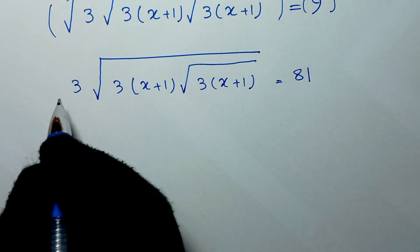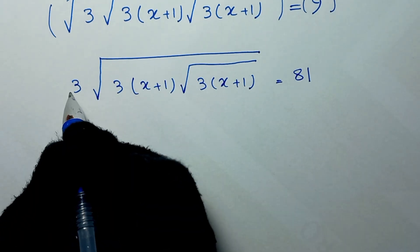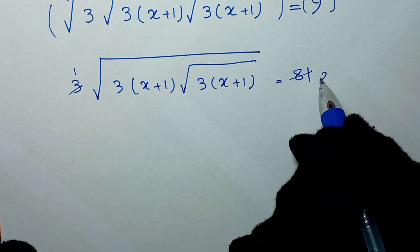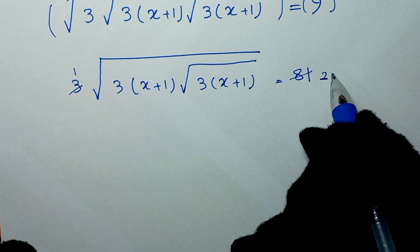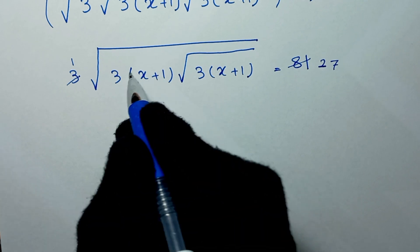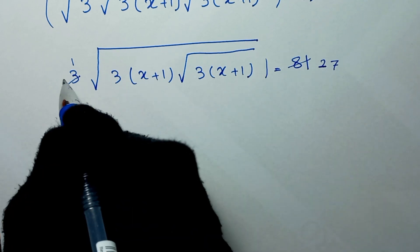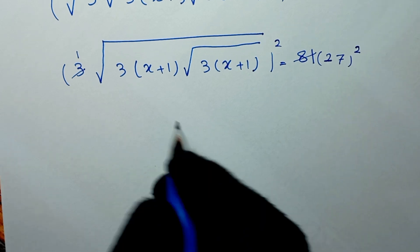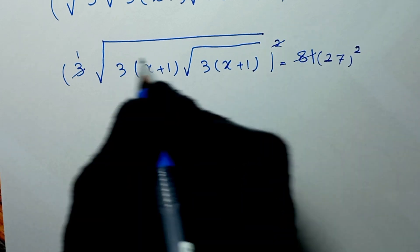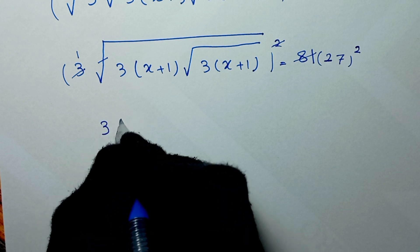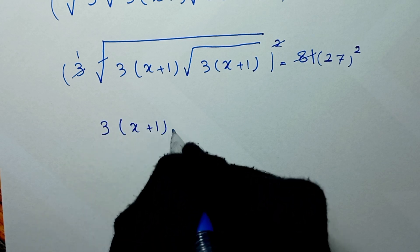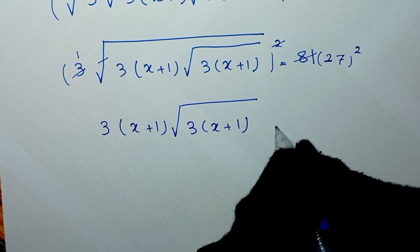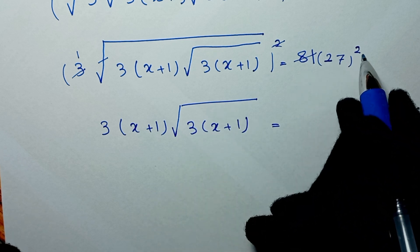In the next step, we divide both sides of the equation by 81 — 81 divided by 3 is 27. Then in the next step, we square both sides of the equation again. This power of 2 cancels the square root, and it will be 3 times x plus 1 times square root of 3 times x plus 1 is equal to 27 squared.